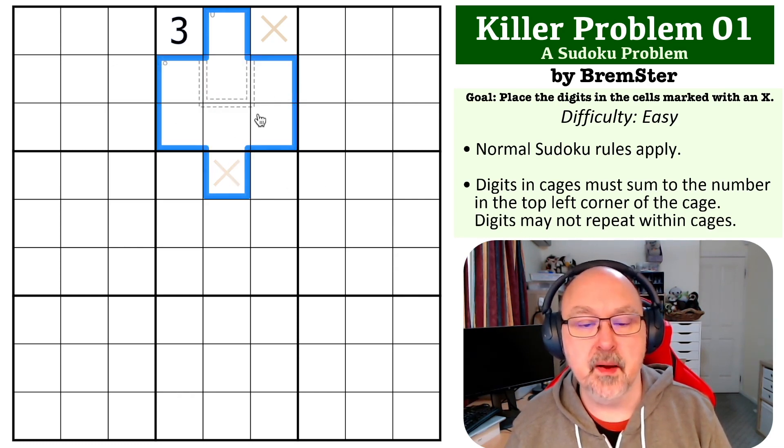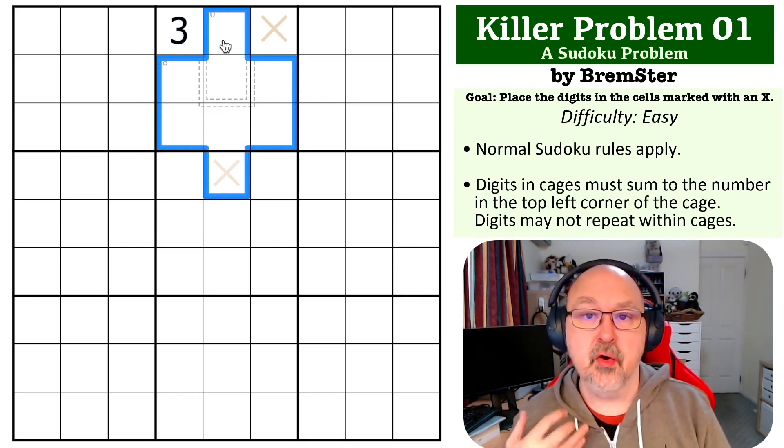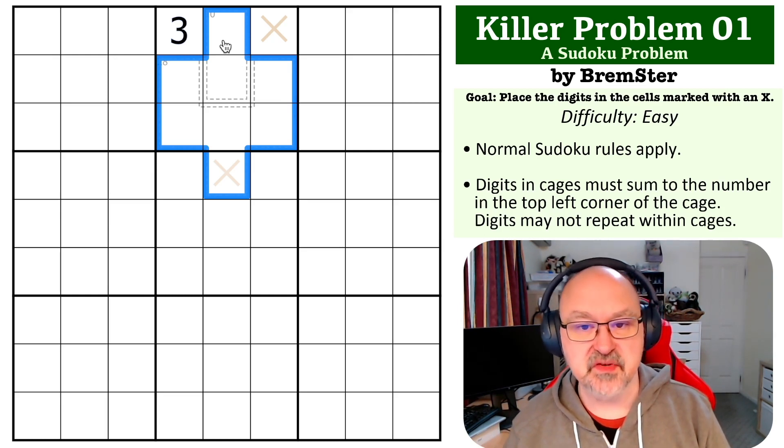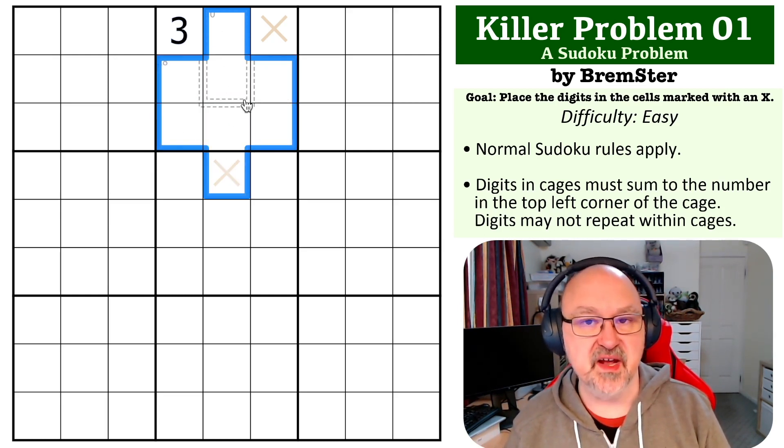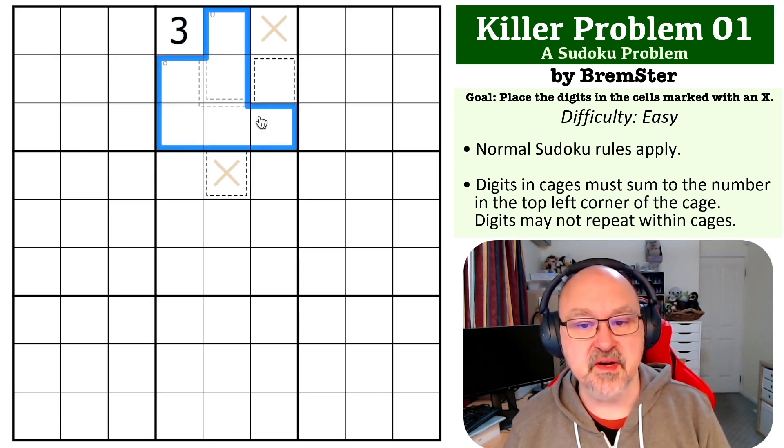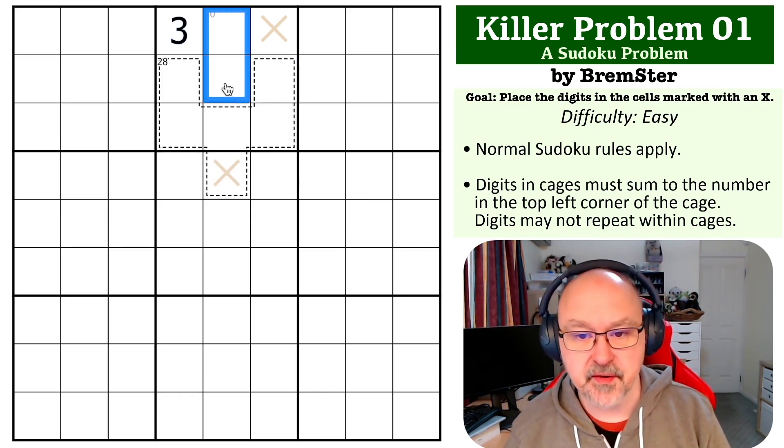So what you know about an eight-cell 38 cage is because all of the, and you can't repeat digits, all of the digits from one to nine add to 45. So what you know from this is because 45 minus 38 is a seven, you can never put a seven into this cage. Otherwise, you're not going to be able to put a 45 anywhere without breaking it once you try and resolve it.